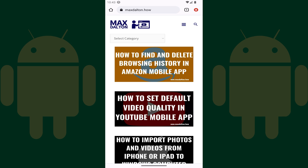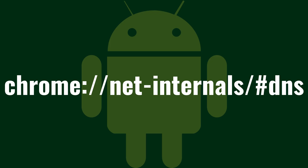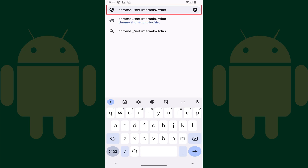Step 2: Tap inside of the URL bar, type chrome://net-internals/#dns, and then tap Enter.